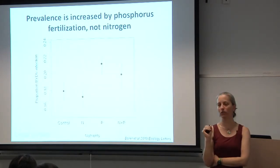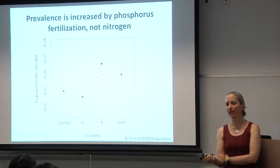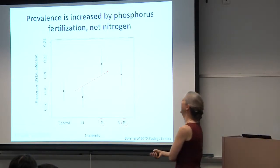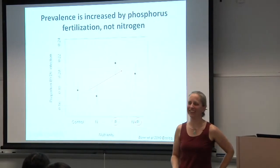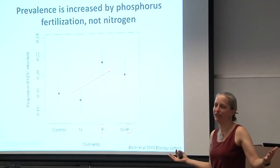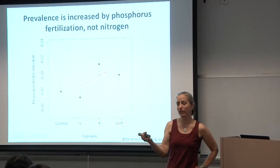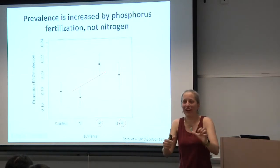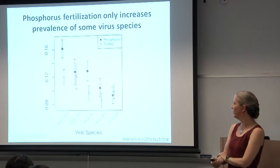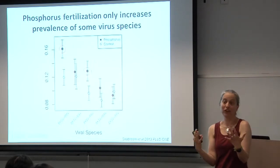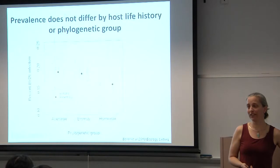But what about nutrients — that nutritional context? When we fertilize with phosphorus, we see a really strong signal of prevalence. On the y-axis is the proportion of infection across these field plots across seven degrees of latitude. We find this very consistent result that prevalence of infection is increased when we increase phosphorus supply. But when we look at each virus behind this overall prevalence, there are really only two viruses that are massively, dramatically increased in terms of infection. The rest of them are not strongly affected.